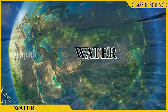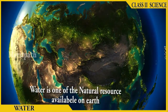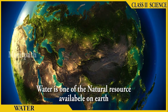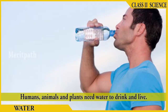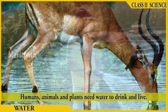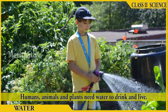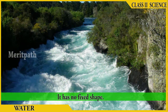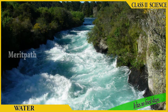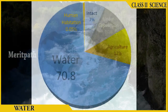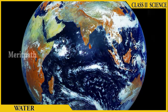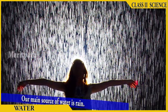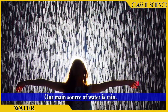Water is one of the natural resources available on Earth. Humans, animals, and plants need water to live. It has no fixed shape and covers 71% of the Earth's surface. Our main source of water is rain.